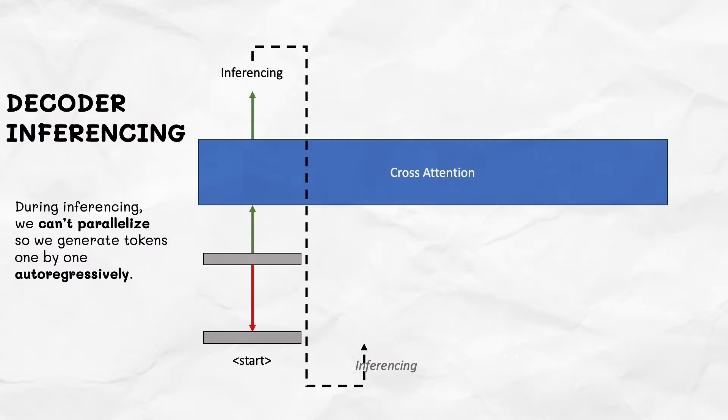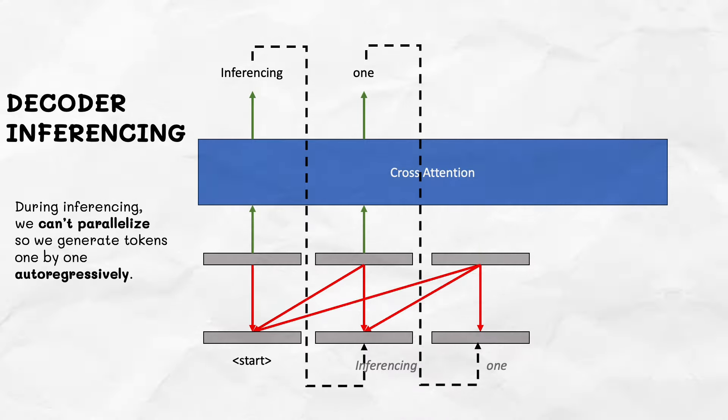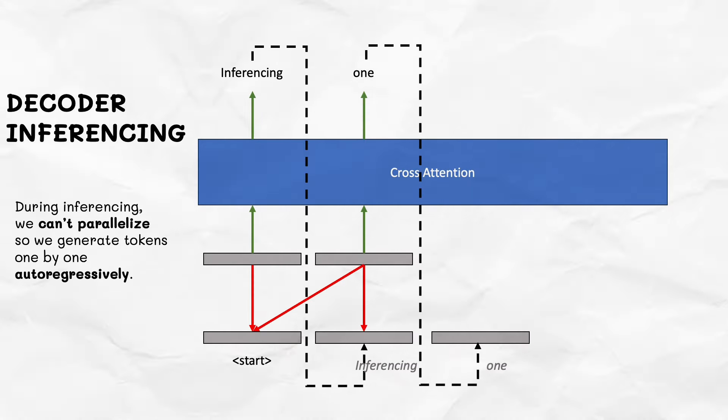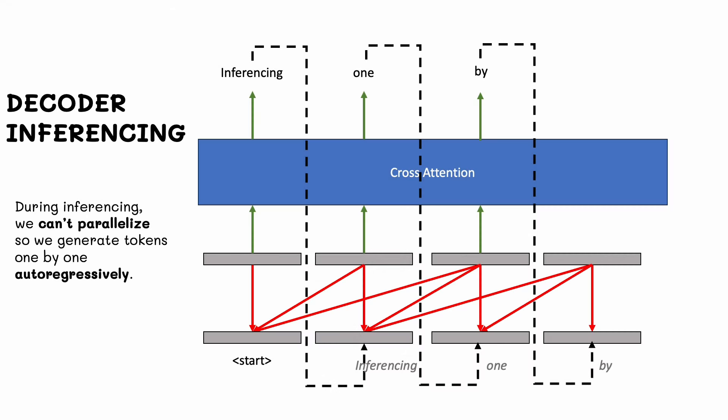A word of caution: parallelization in the decoder is only possible during training, because we already have the entire target English sentence available from the training dataset. During inference, parallel processing is not possible — instead we switch to the autoregressive token-by-token generation that RNNs do. Inferencing with transformers can be sped up with tricks like KV caching, but that topic is saved for another video.